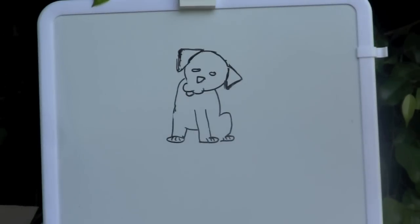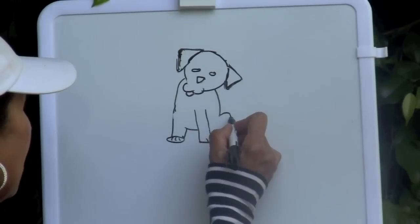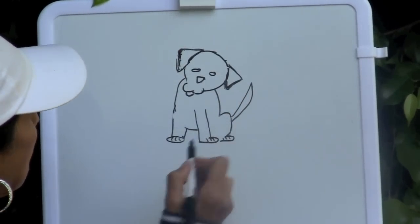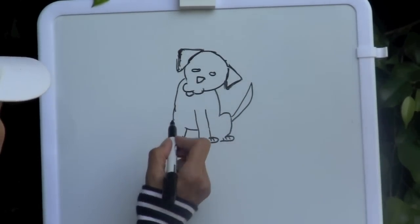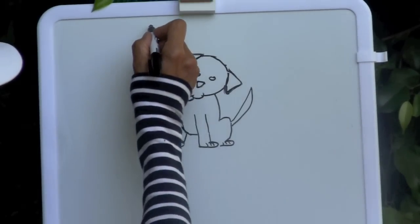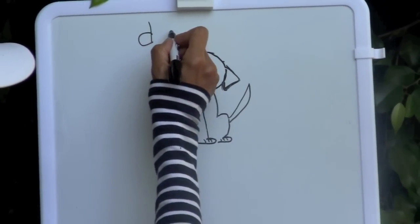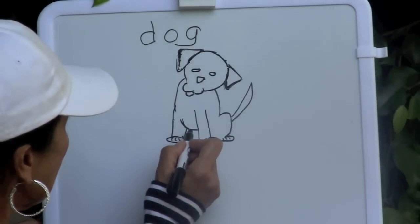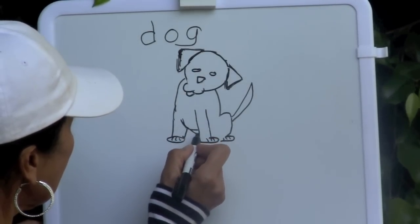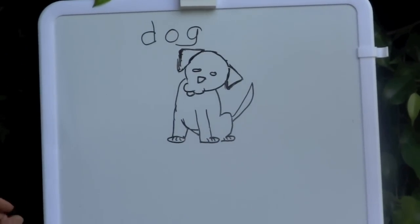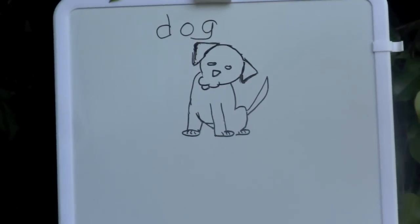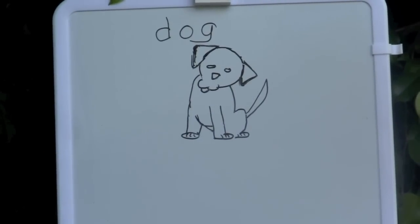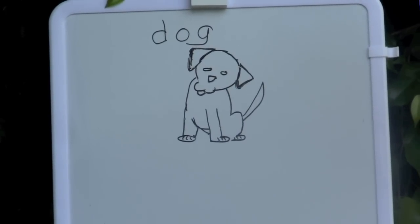Get your eraser and erase those overlapping lines. And then draw a tail. How do you spell dog boys and girls? D-O-G dog. And there we are, we have two farm animals: a cow and a dog. See you the next time.